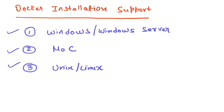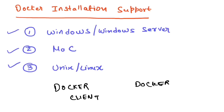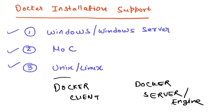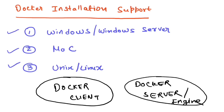Docker majorly contains two things: one is the Docker Client, and the second is the Docker Server. The Docker Server is also called the Docker Engine. So Docker Engine and Docker Server are the same thing — these two components come as part of your Docker installation.